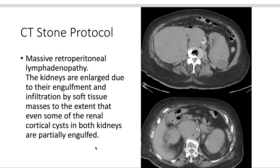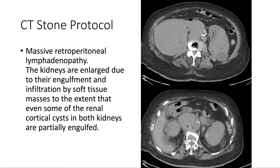Taking a look at the CT, we note massive retroperitoneal lymphadenopathy. The kidneys are enlarged due to their engulfment and infiltration by soft tissue masses, to the extent that even some of the renal cortical cysts in both kidneys are partially engulfed.